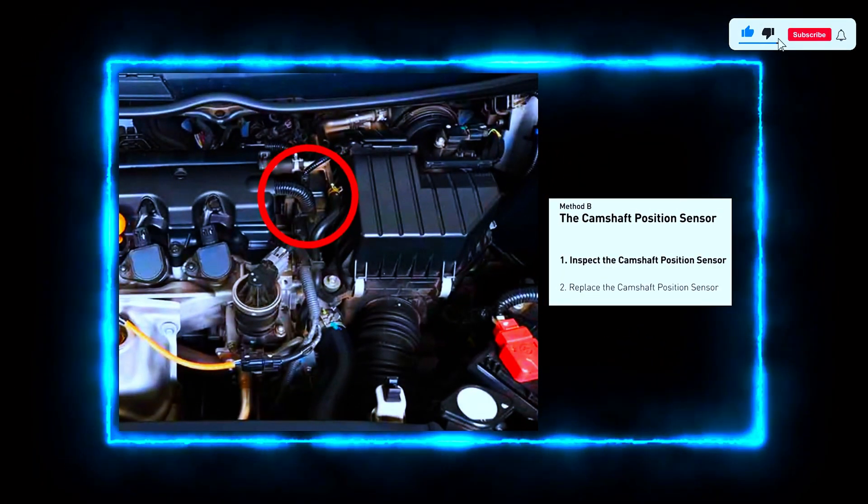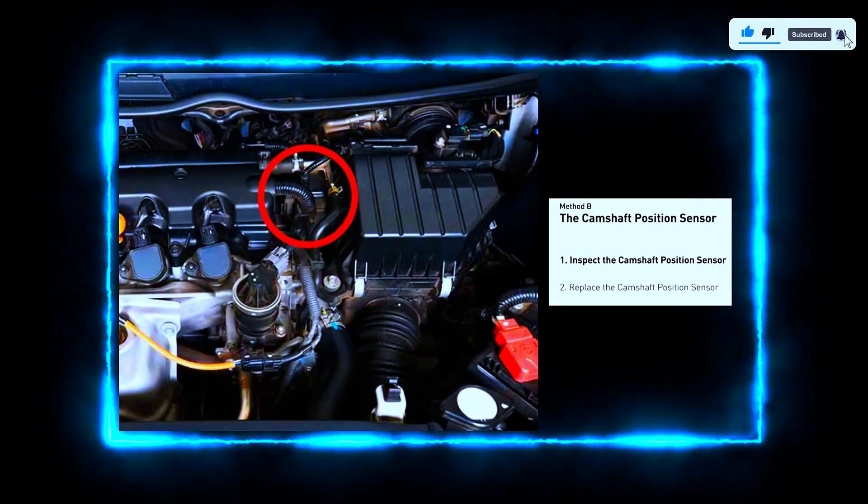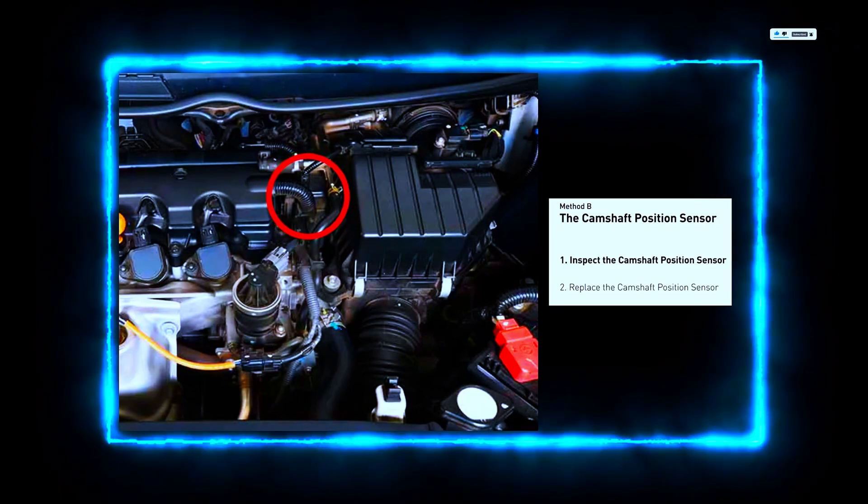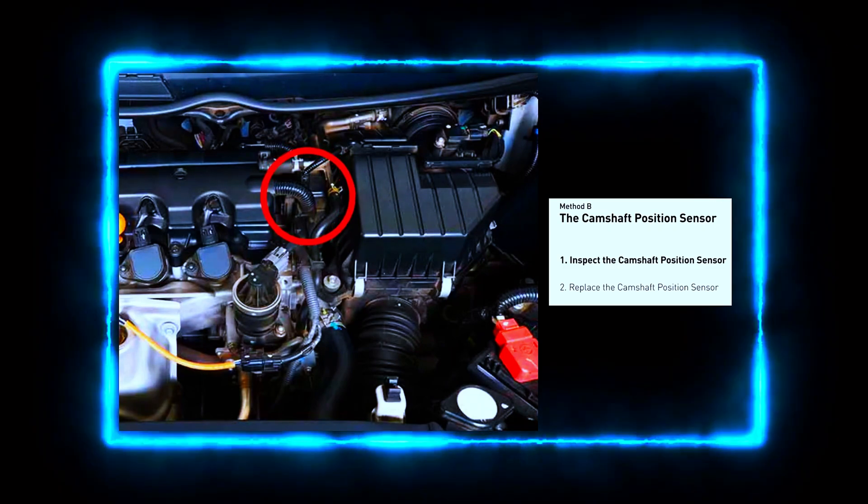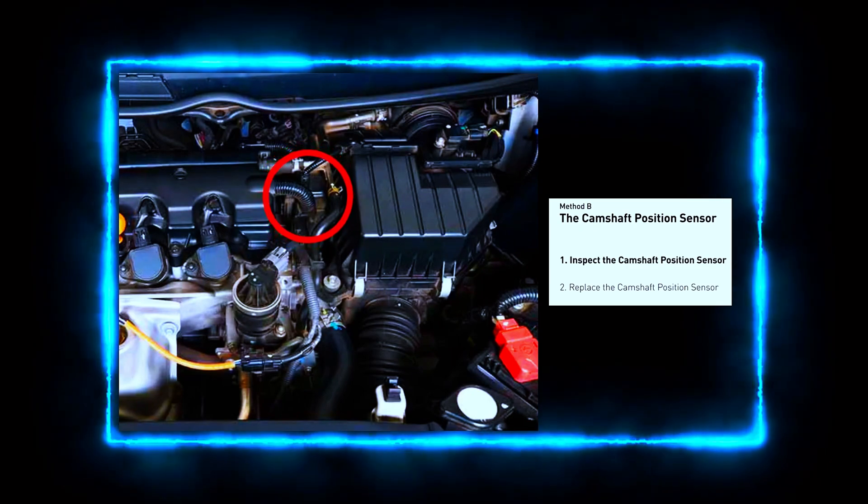Locating the camshaft position sensor. Depending on your car model, the sensor can be found near the cylinder head or sometimes near the timing belt cover. Check your service manual to confirm.